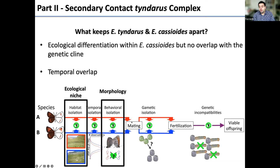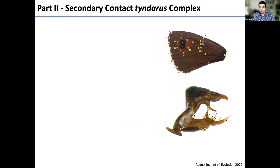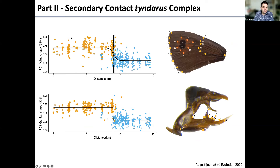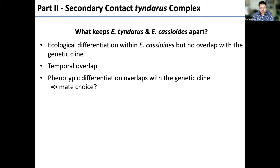For behavioral isolation, Hannah phenotyped several hundred individuals for wing shape and male genital morphology, then ran principal components analysis and fitted a cline across the secondary contact zone. The clines for male genitalia and wing shape are relatively narrow and overlap with the genetic cline. Male genitalia cline is extremely narrow. This overlap with the genetic cline could potentially suggest mate choice as a barrier. Camille is now investigating pheromones of these butterflies to explore this further.